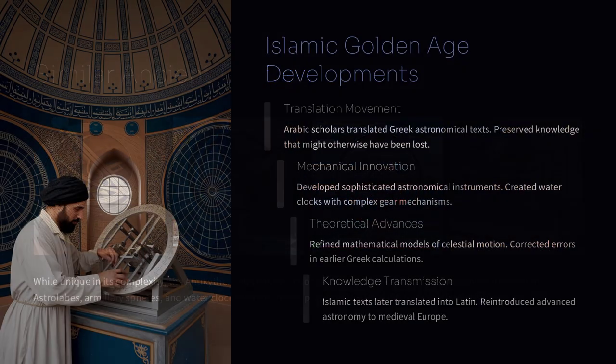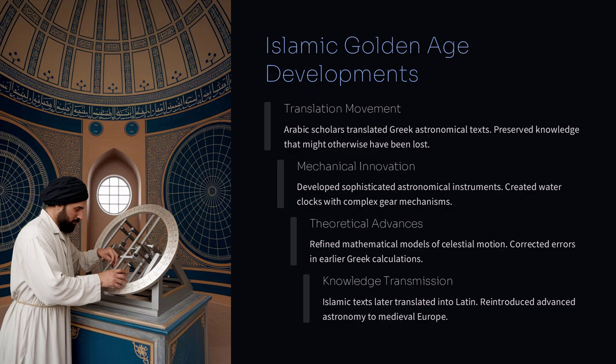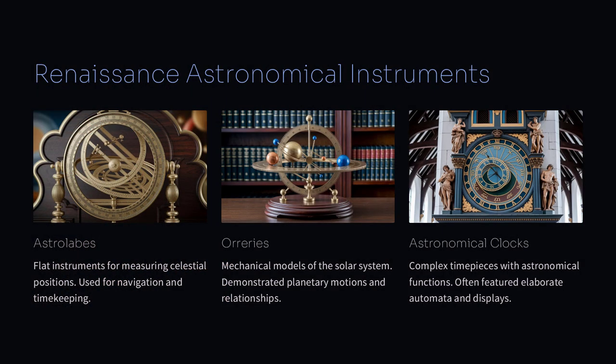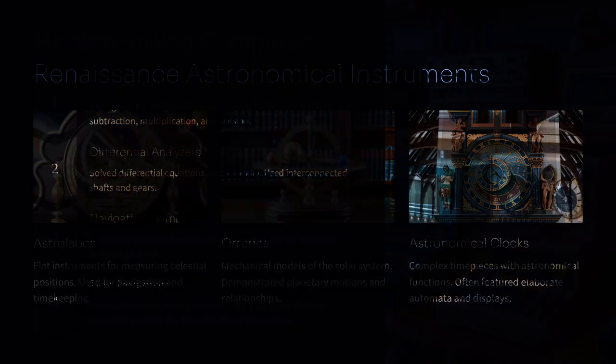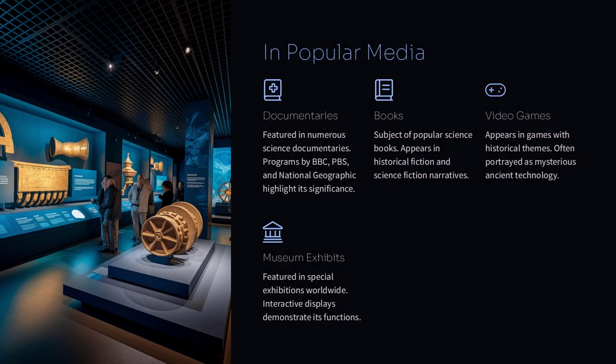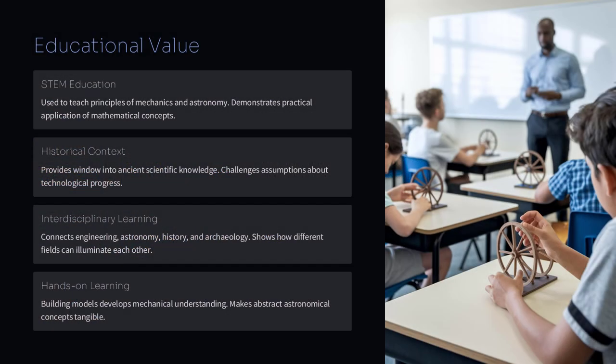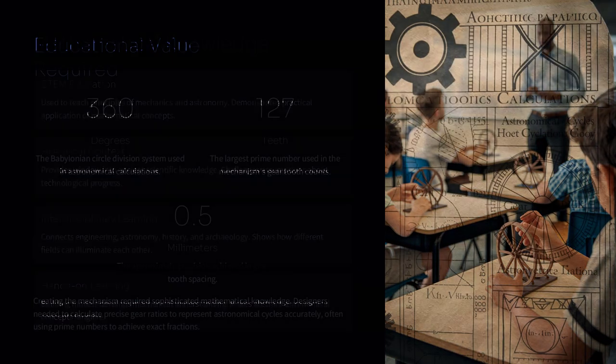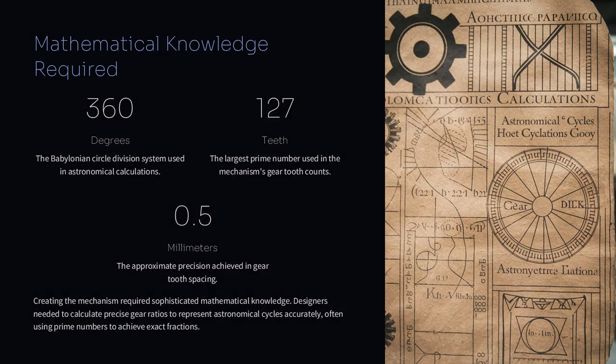Engineers today have built working models of the Antikythera mechanism. These models help us understand how the original device might have worked. By turning the gears and setting the dials, modern builders can recreate the astronomical predictions that the ancient mechanism made. This hands-on approach makes the history of technology feel alive and shows that even in ancient times, people were inventing machines that we would consider high-tech today.